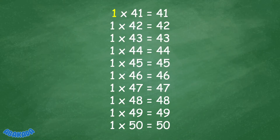1 times 41 equals 41. 1 times 42 equals 42. 1 times 43 equals 43. 1 times 44 equals 44. 1 times 45 equals 45.